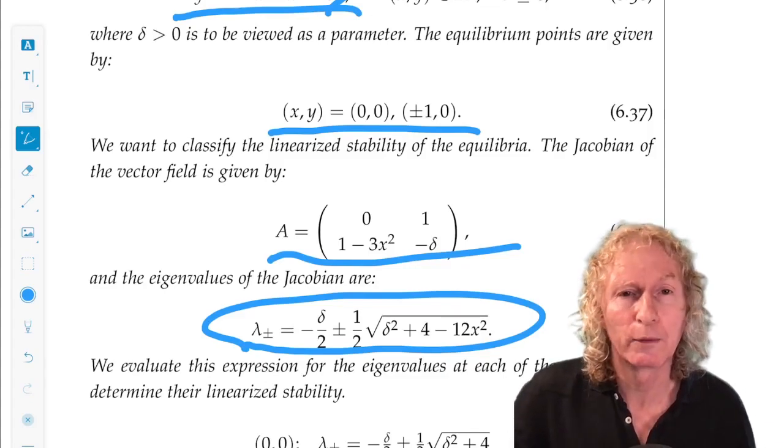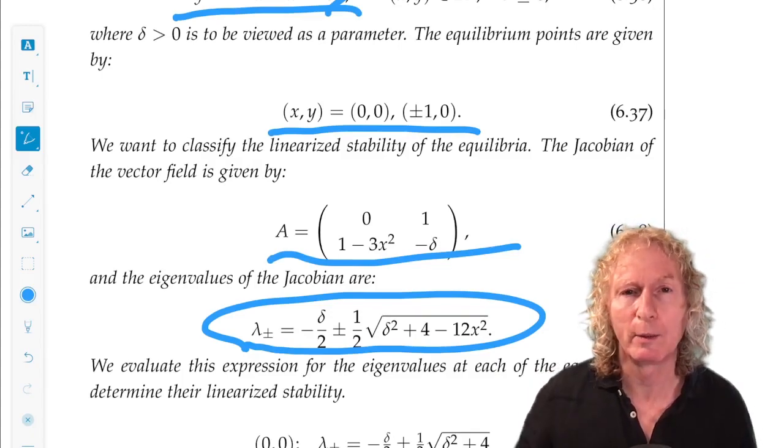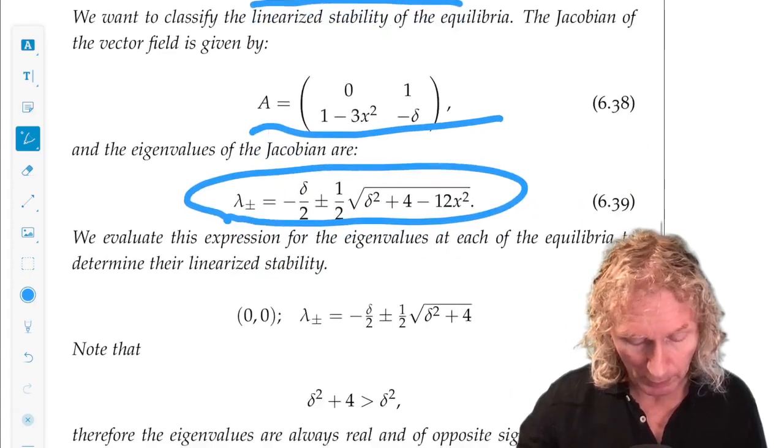This handy little formula for eigenvalues of two-by-two matrices, you may know already, but it's derived in Appendix A. And it's really useful. You use it over and over again.